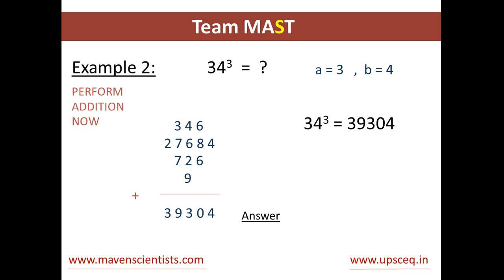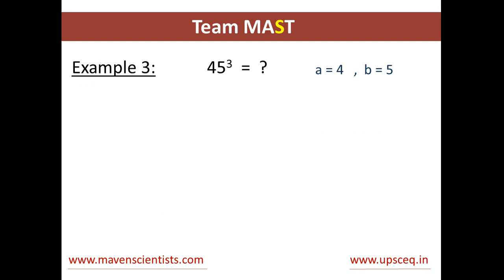So you can see how easy it is to calculate the cube of a two-digit number. This strategy will calculate the cube of any two-digit number. So let's do it once again for Example 3, for the number 45. Here, a is 4 and b is 5.